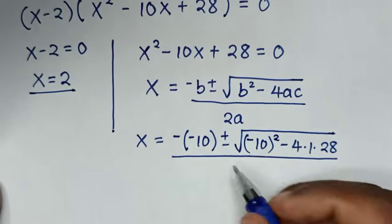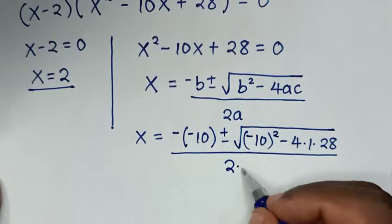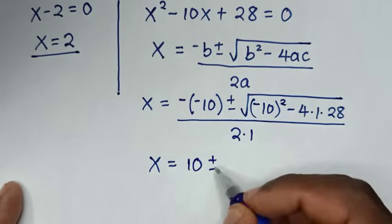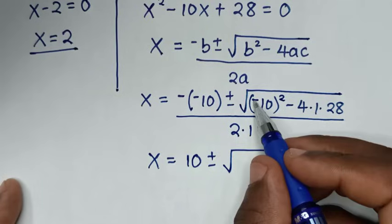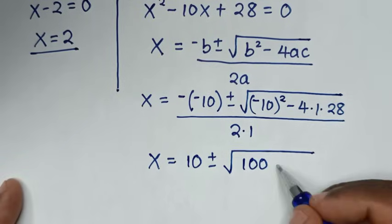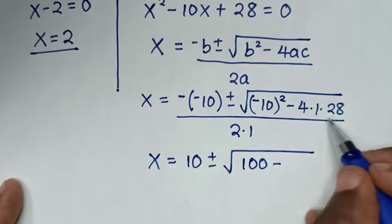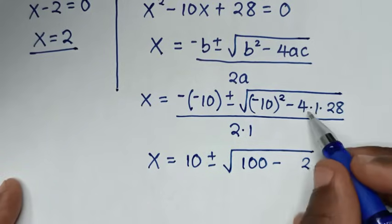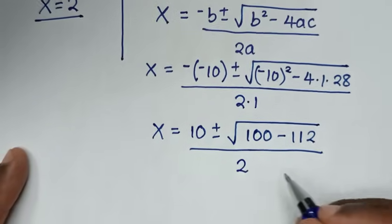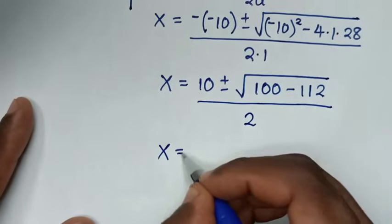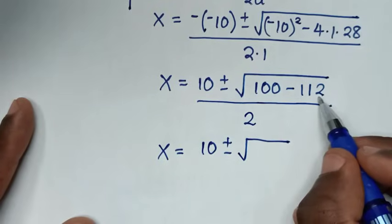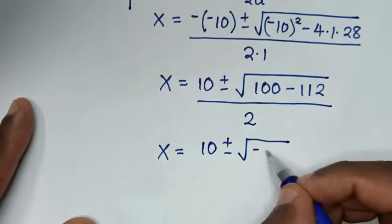Simplifying: negative of negative 10 is positive 10. (-10)² = 100. 4 times 28: 4×8 = 32 carry 3, 4×2 = 8 + 3 = 11, so 4×28 = 112. Therefore: x = (10 ± √(100 - 112)) / 2 = (10 ± √(-12)) / 2.